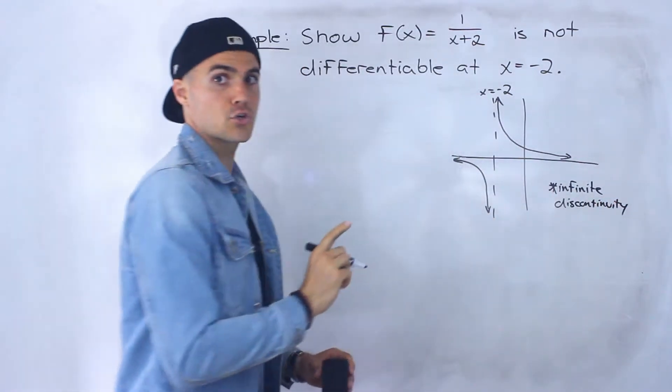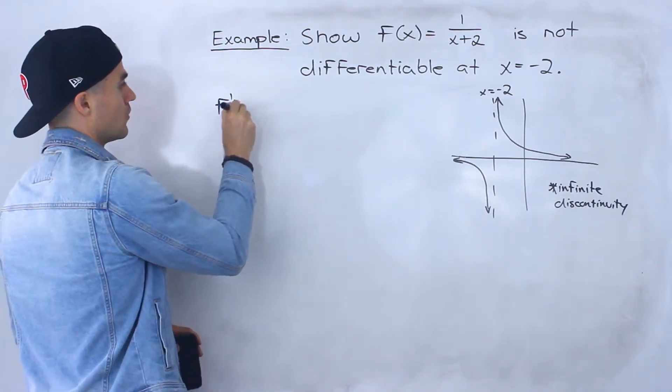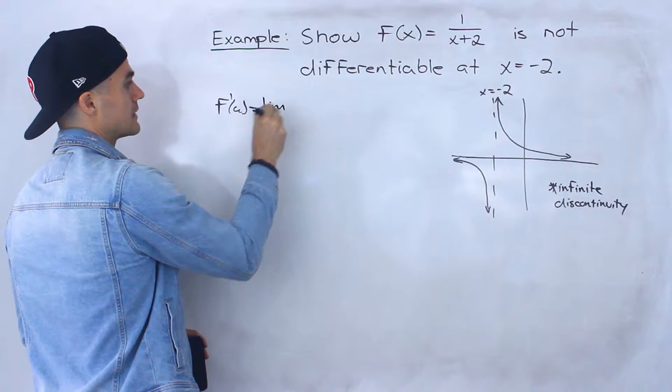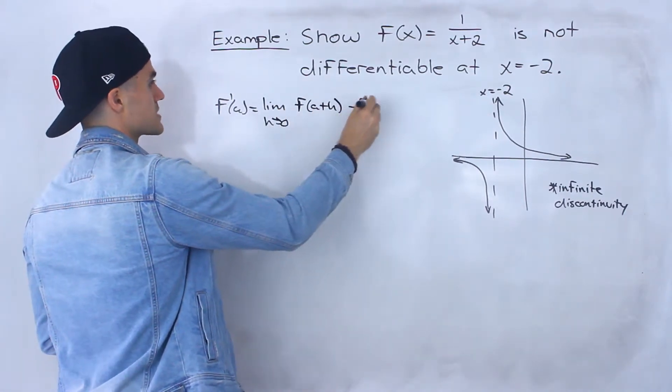Now if we were to show what the difference quotient, remember to show functions not differentiable, we basically have to show that this limit here, the definition of a derivative doesn't exist.